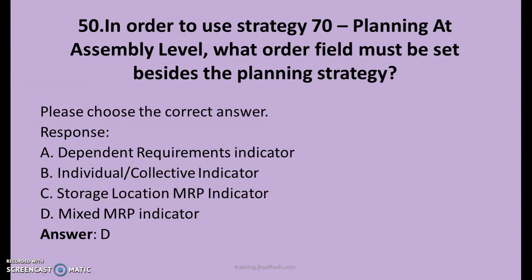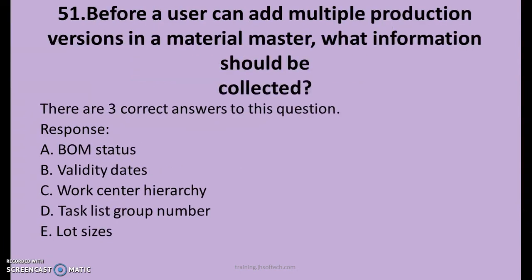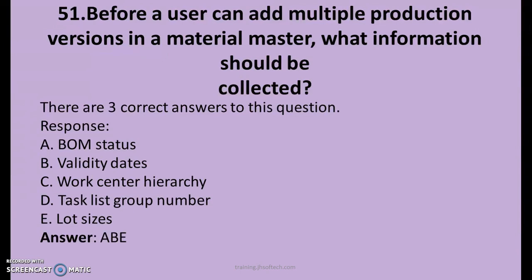Since one question was missed where the D option was not captured, the 51st question is also covered here to make a complete 25 questions. 51st question: Before a user can add multiple production versions in a material master, what information should be collected? A. BOM status, B. Validity dates, C. Work center hierarchies, D. Task list group, E. Lot sizes. The right answers are A, B and E: Bill of material status, Validity dates, and Lot sizes.